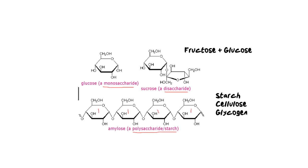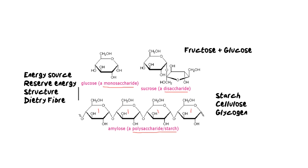Carbohydrates have some very important functions, running on the basic principle of providing energy for the organism. These functions include being an energy source — glucose is the most readily available energy for any organism — as well as a reserve energy source in the form of stored carbohydrates found in the muscles of animals and in plants. In plants, carbohydrates also provide structure and shape, since plants don't have bones. Lastly, carbohydrates provide dietary fiber, which is particularly important in animals' digestive systems to allow matter to move through successfully.